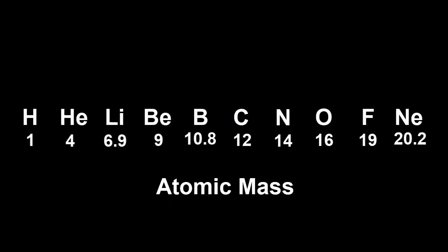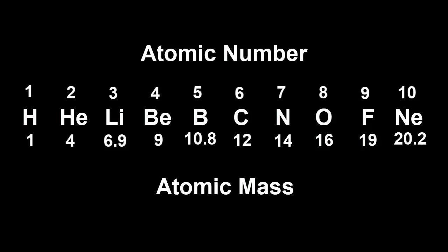They've now worked out the atomic masses of all the other kinds of atoms, so each element has two numbers belonging to it: its atomic number, showing its place in the list of atoms, and now its atomic mass, showing how heavy it is compared to hydrogen.